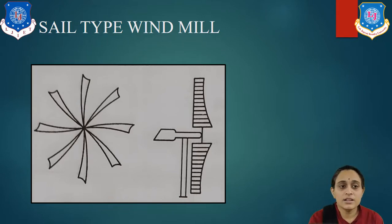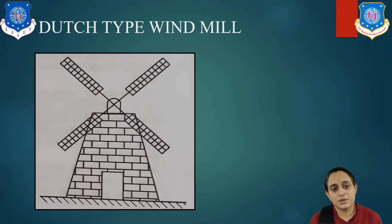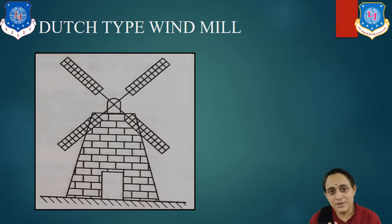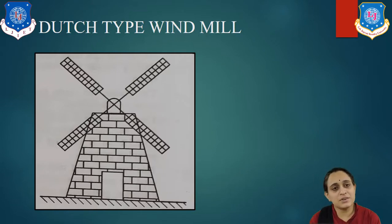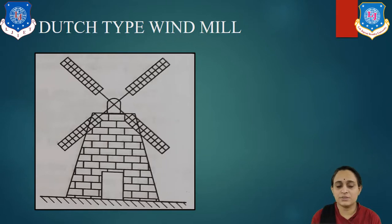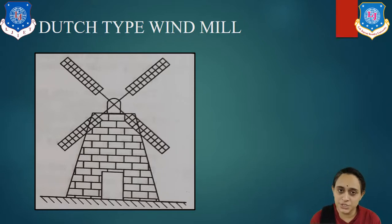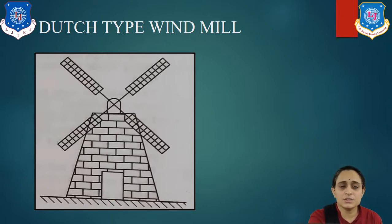Now let us study the Dutch type windmill. As you see in the diagram, it is one of the oldest designs — we were using it in flour mills for grinding grains. There are four blades, opposite to each other, made of wood. It has a frame-like structure and a tower made from brick. There are two rotating bearings on top of the tower — one can rotate the rotor, and a pulley is fitted to the shaft and rotates the machine by a belt. This windmill is mainly used for water pumping and grinding.